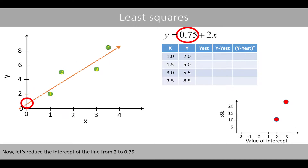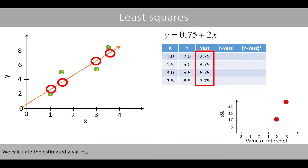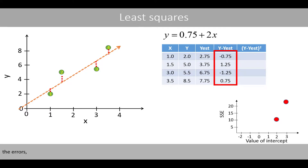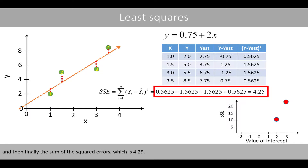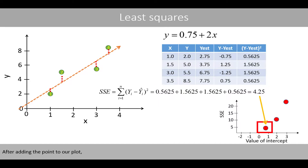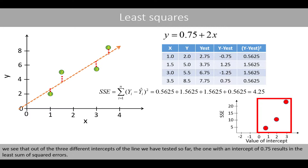Now, let's reduce the intercept of the line from 2 to 0.75. We calculate the estimated y-values, the errors, the squared errors, and finally the sum of the squared errors, which is 4.25. After adding the point to our plot, we see that out of the three different intercepts tested so far, the one with an intercept of 0.75 results in the least sum of squared errors.